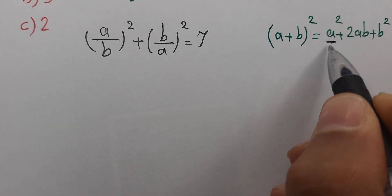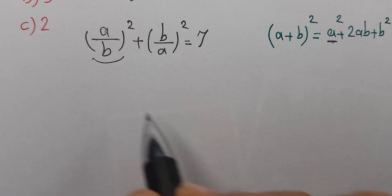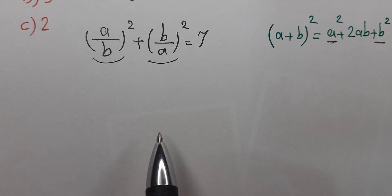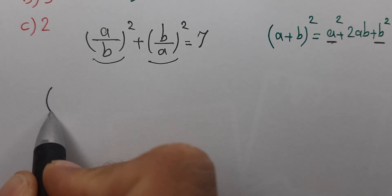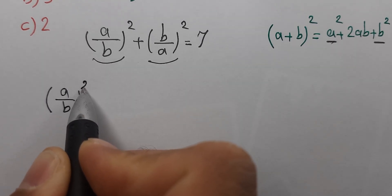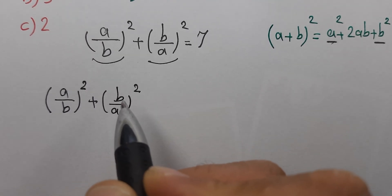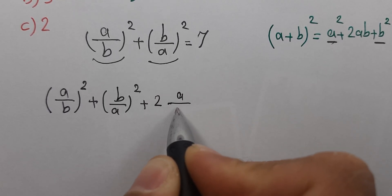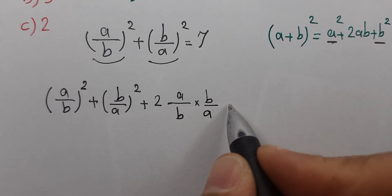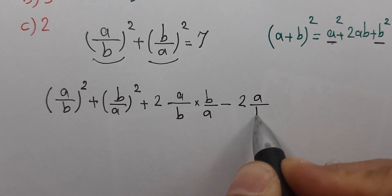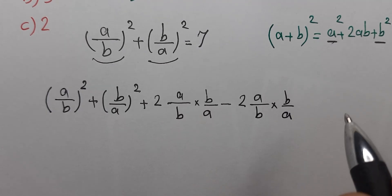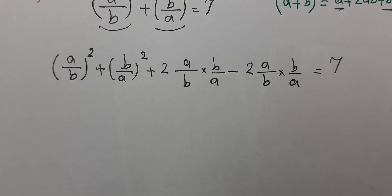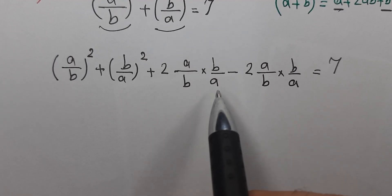Now a² is (a/b)² for us and b² is (b/a)² for us. We can write (a/b)² + (b/a)² plus 2 times (a/b) times (b/a), minus 2 times (a/b) times (b/a), equals 7.